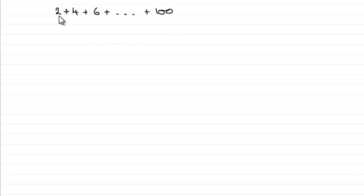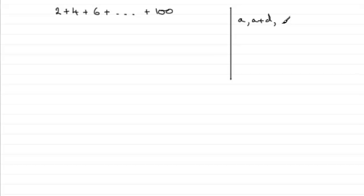What we've got here is an arithmetic series, and you should be familiar with arithmetic series. The first term is always called a, and the next term is a plus d — we always add on the same difference between each term, and that's called d. So the third term would be a plus 2d, the fourth term a plus 3d, and so on.